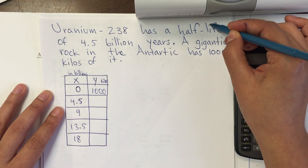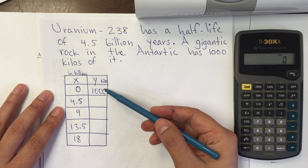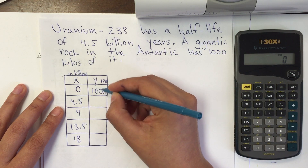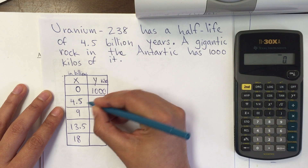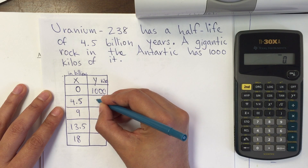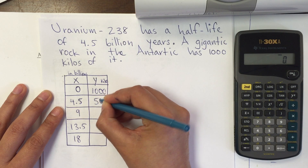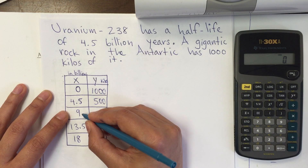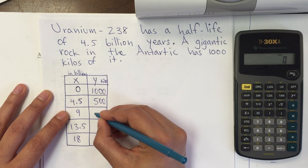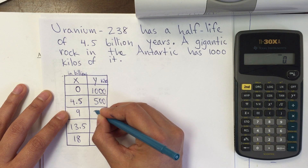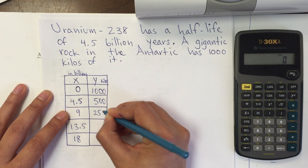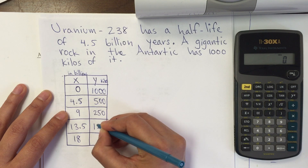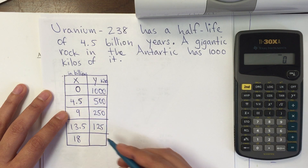What does half-life mean? It means we're going to have half of the matter remaining. So starting at 1,000 kilos, after 4.5 billion years we have 500, then 250 after 9 billion years, then 125 — because half of 250 is 125.